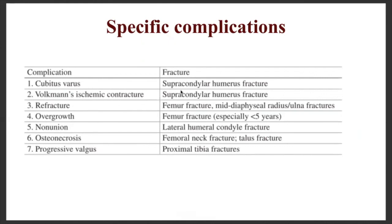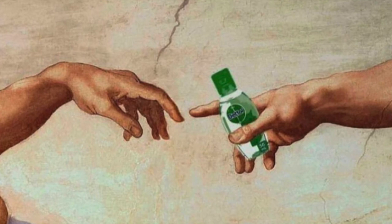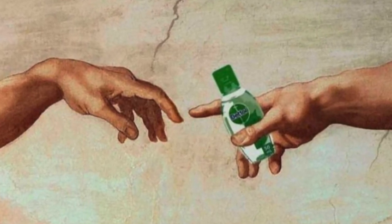Specific complications to remember per fracture type: supracondylar humerus fracture — cubitus varus and Volkmann's ischemic contracture; mid-shaft physeal radius and ulnar fracture — refractures; femur fractures in children under 5 years — overgrowth; lateral humeral condylar fracture — non-union; femoral neck fractures — Salter fractures which can cause osteonecrosis; proximal tibial fractures — progressive valgus. Thank you, stay healthy and good luck.